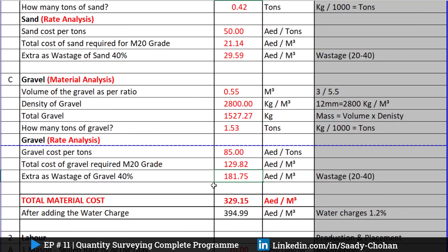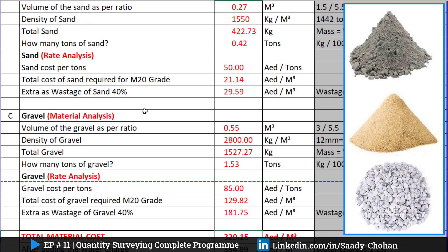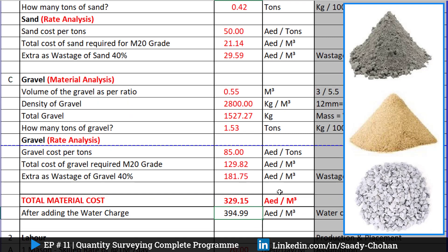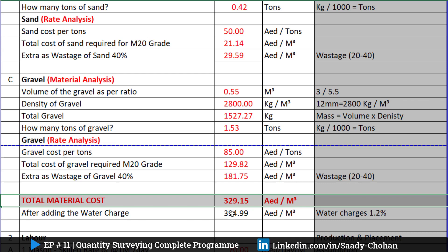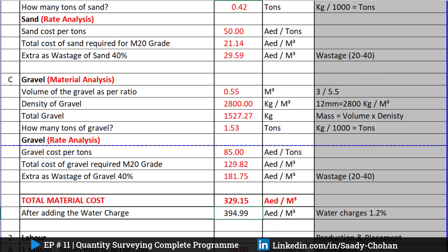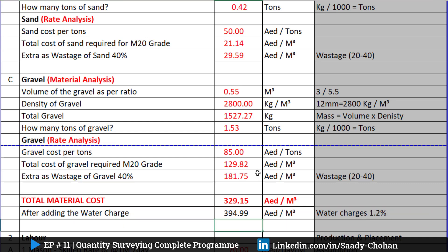Once we have cement, sand, and gravel costs, I simply sum them: cement 117, sand 29.59, gravel 181 — total material cost is 329 AED per cubic meter. If you also consider water charge — around 15 to 20 percent — I've added 20 percent here, bringing the total to approximately 395 AED per cubic meter. The concept applies regardless of the unit or currency you use.